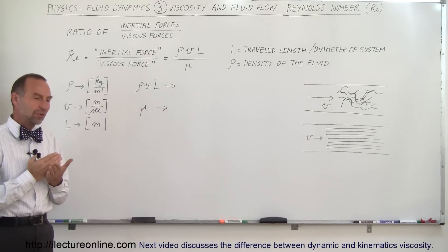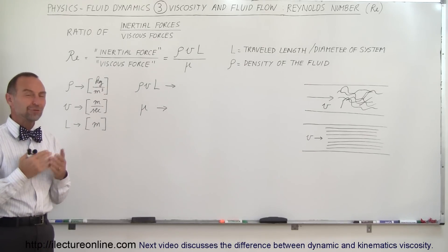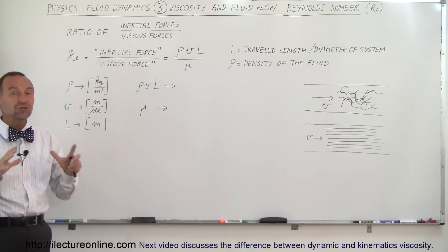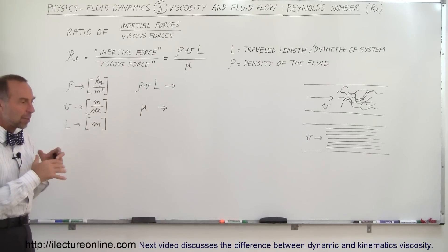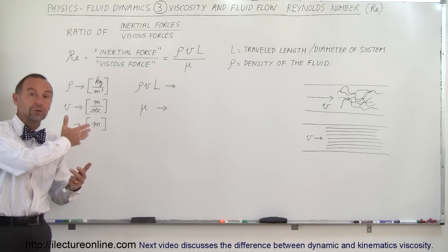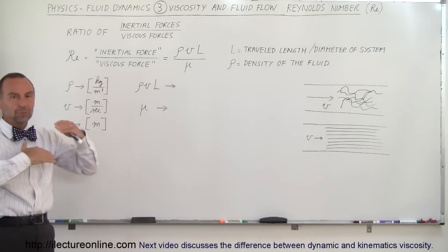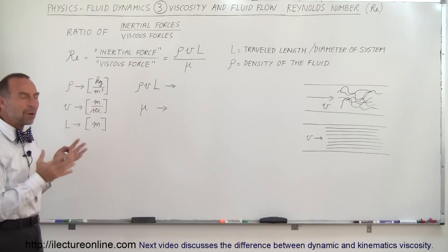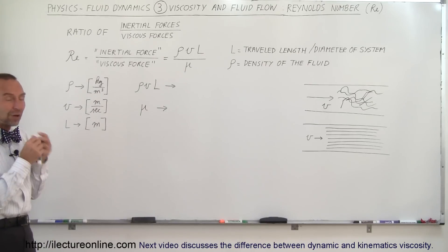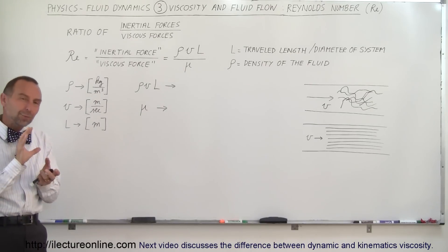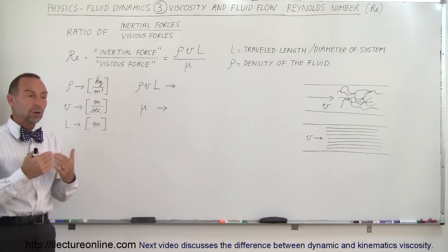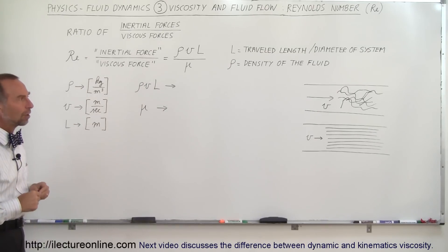Reynolds number can be confusing because it is slightly different under different geometric conditions depending upon the situation — whether it's fluid flowing through a channel, through a pipe, between plates, or objects moving through a fluid. The Reynolds number will represent a slightly different thing and the resulting numbers will be different for different situations.